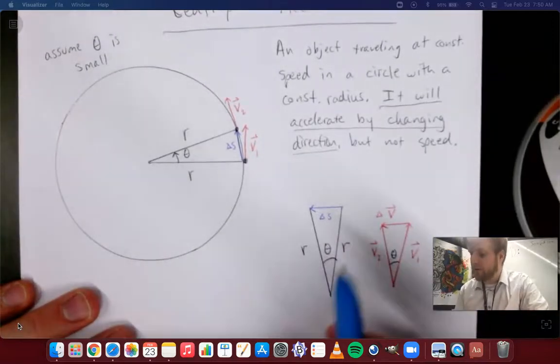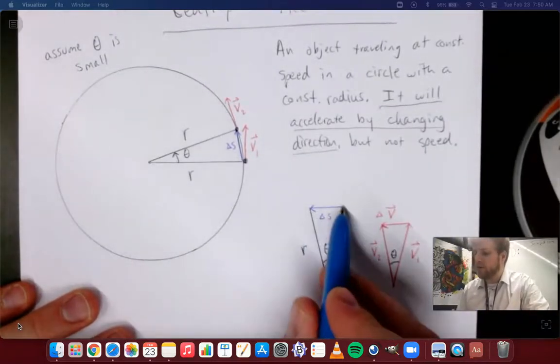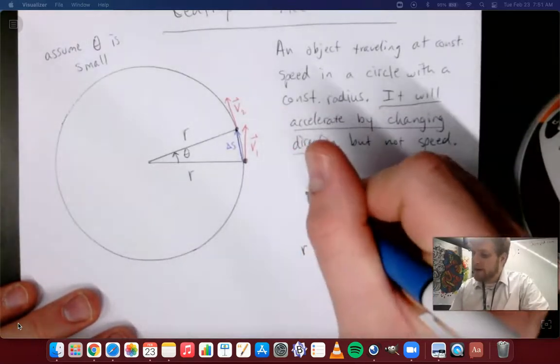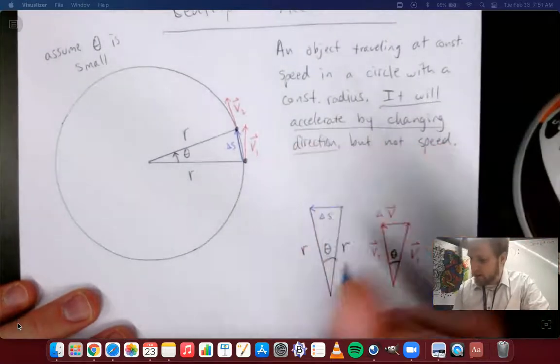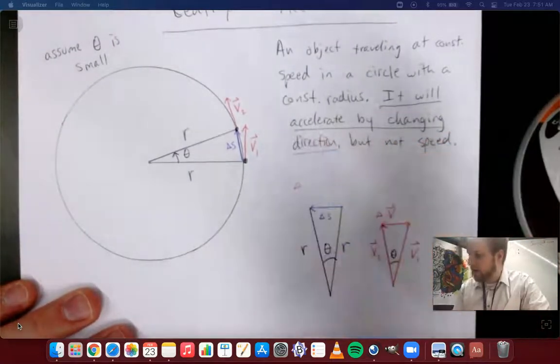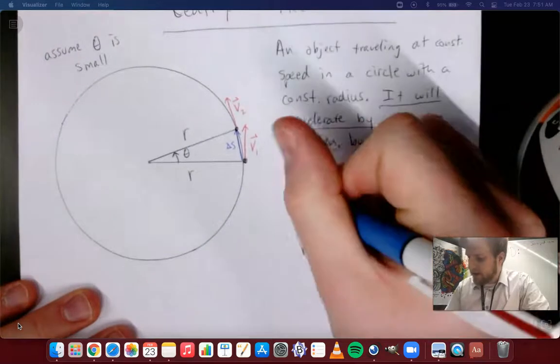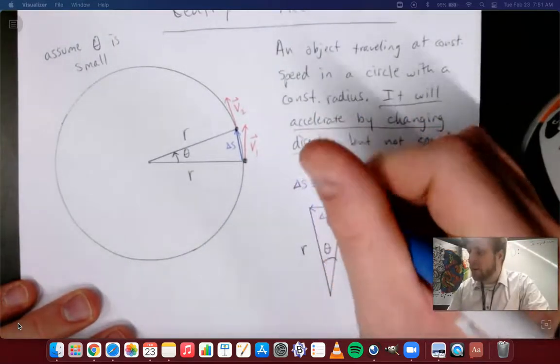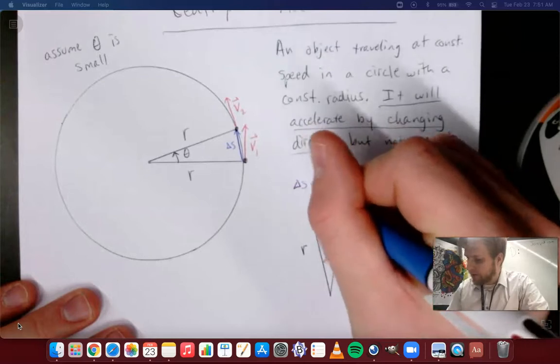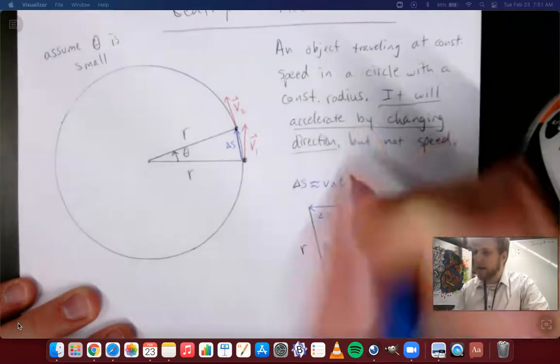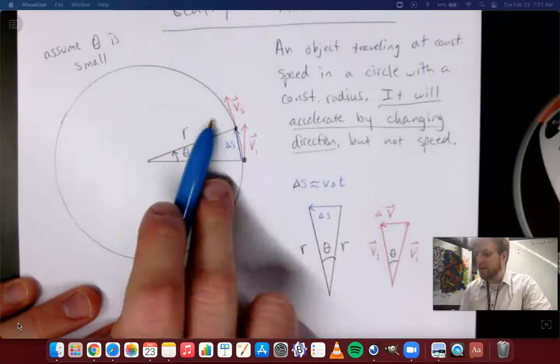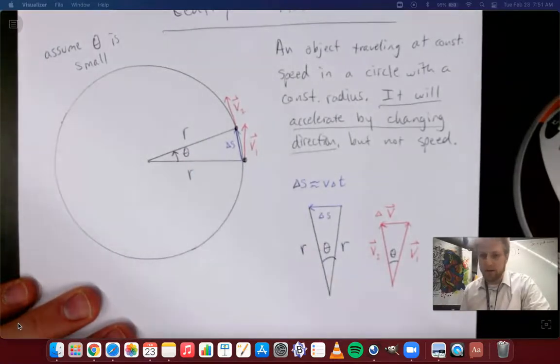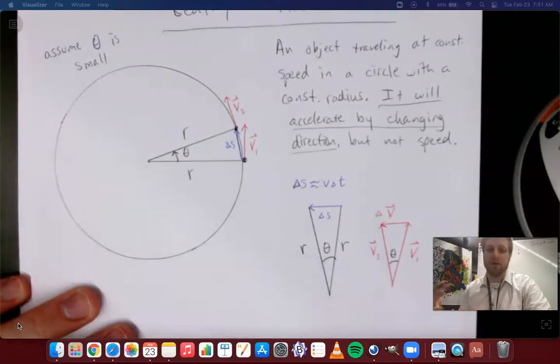A couple things I want to note about this. First, this is just a change in position we started here on the circle and moved to there. Distance is just rate times time, so I'll write that in the language we've been using here. So the change in the position delta s is equal to, or very closely equal to v delta t, keeping in mind here that this is actually moving in a circle, we're assuming a small angle so that this distance is very close to that arc length. Again, if that's confusing, it's really okay for our purposes here.